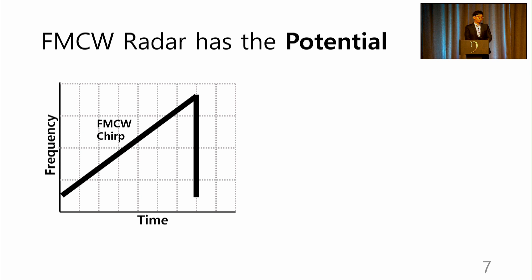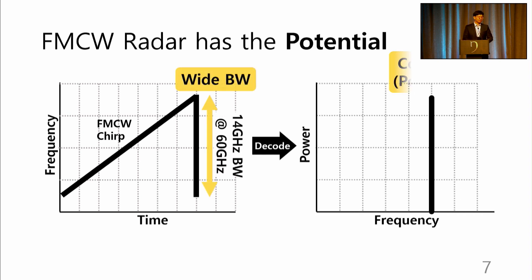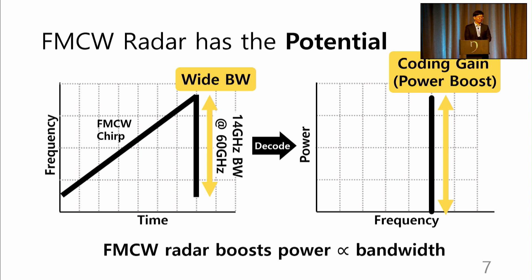A potential solution to the loss is the FMCW radar. The FMCW radar coding gain efficiently translates large bandwidth to boosted signal power. This is ideal for millimeter wave, where you get about 14 gigahertz of bandwidth.